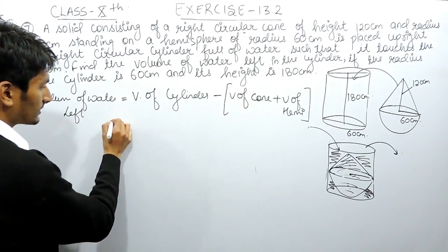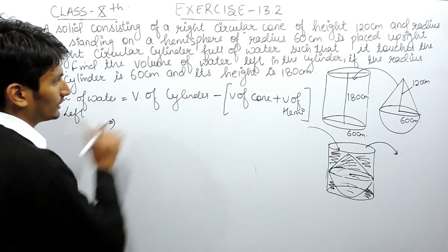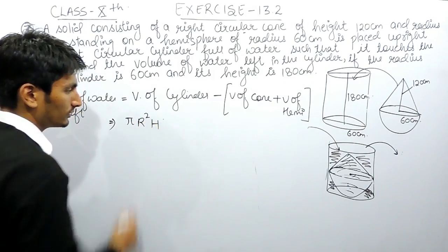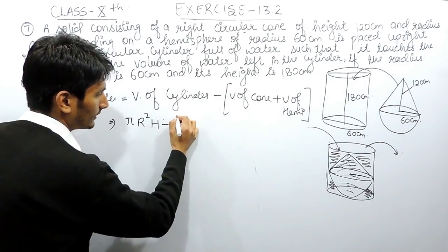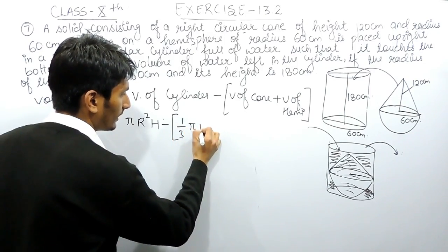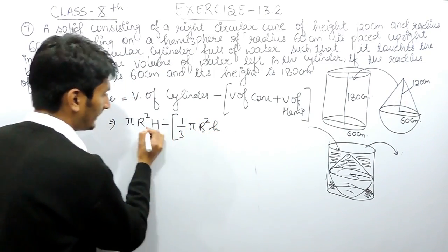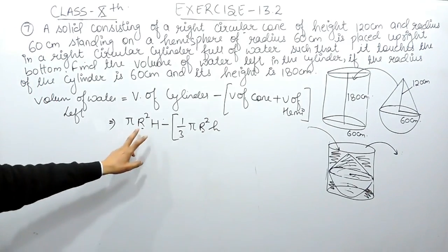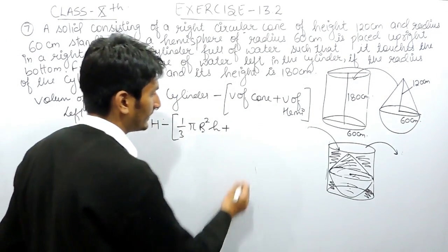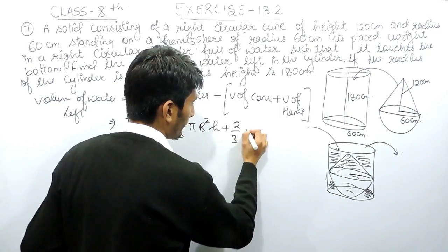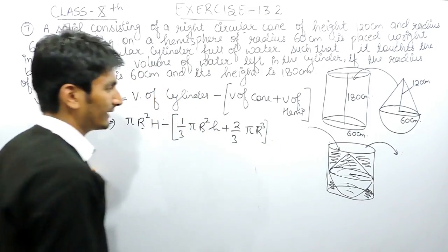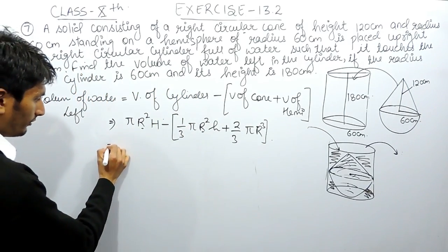Now substituting the formulas: the volume of the cylinder is π r² h, minus the volume of the cone which is (1/3) π r² h — the radius is the same in all cases — plus the volume of the hemisphere which is (2/3) π r³. Again the radius is the same throughout.